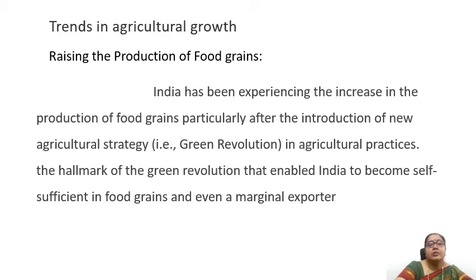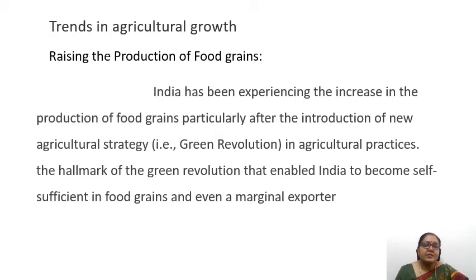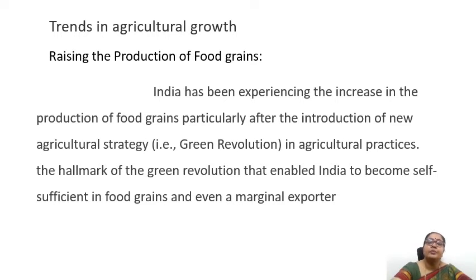Looking at the trends in agricultural growth, India has been experiencing an increase in the production of food grains, particularly after the introduction of the new agricultural strategy — the green revolution. The hallmark of the green revolution has enabled India to become self-sufficient in food grains and even a marginal exporter. We were previously dependent on other countries for wheat and rice, but now we are the second largest producers of these products and are able to export them to other countries.